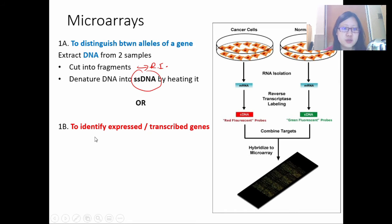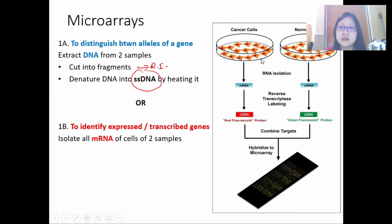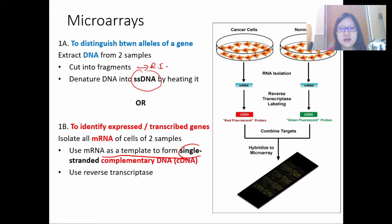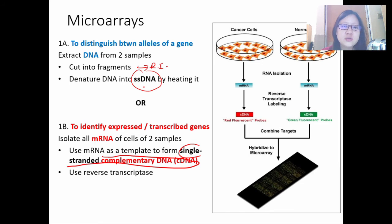What if we want to use microarrays to identify expressed genes? In this case, we extract mRNA of cells from two samples — cancer cells and normal cells. We then convert the mRNA into cDNA using reverse transcriptase. Again, notice that we are looking for single-stranded DNA. Whether you take DNA and denature it, or take mRNA and convert it to cDNA using reverse transcriptase, the goal is the same: single-stranded DNA.